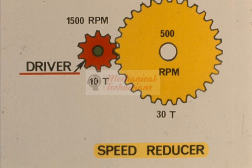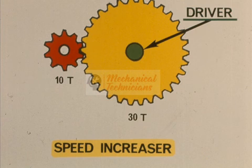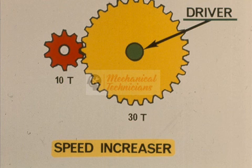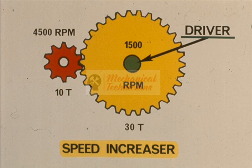If the small gear is turning at 1,500 revolutions per minute, then the large gear will only turn a third as fast, or 500 revolutions per minute. This would be a speed reducer, since the driver is on the high speed shaft. On the other hand, if the driver is coupled to the shaft with the large gear, you will have a speed increaser. In this example, the driver is still turning at 1,500 RPM, but now coupled to the large gear, which turns the small gear three times as fast, at 4,500 RPM.